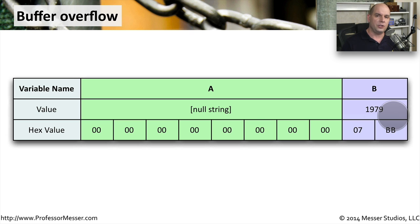The bad guys have determined that if they can change variable B, they might have additional access to your computer. What they're going to try to do is change this byte, which is hexadecimal 07. They want to change that to something else. So what they'll do is add information into variable A that is going to overflow into variable B.